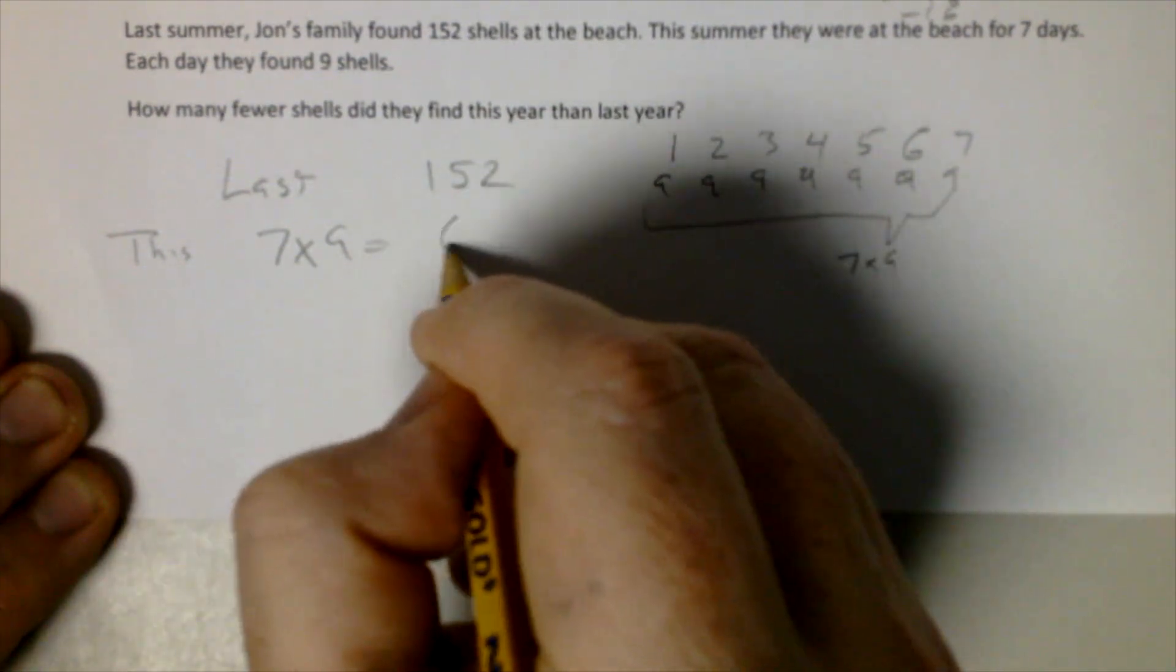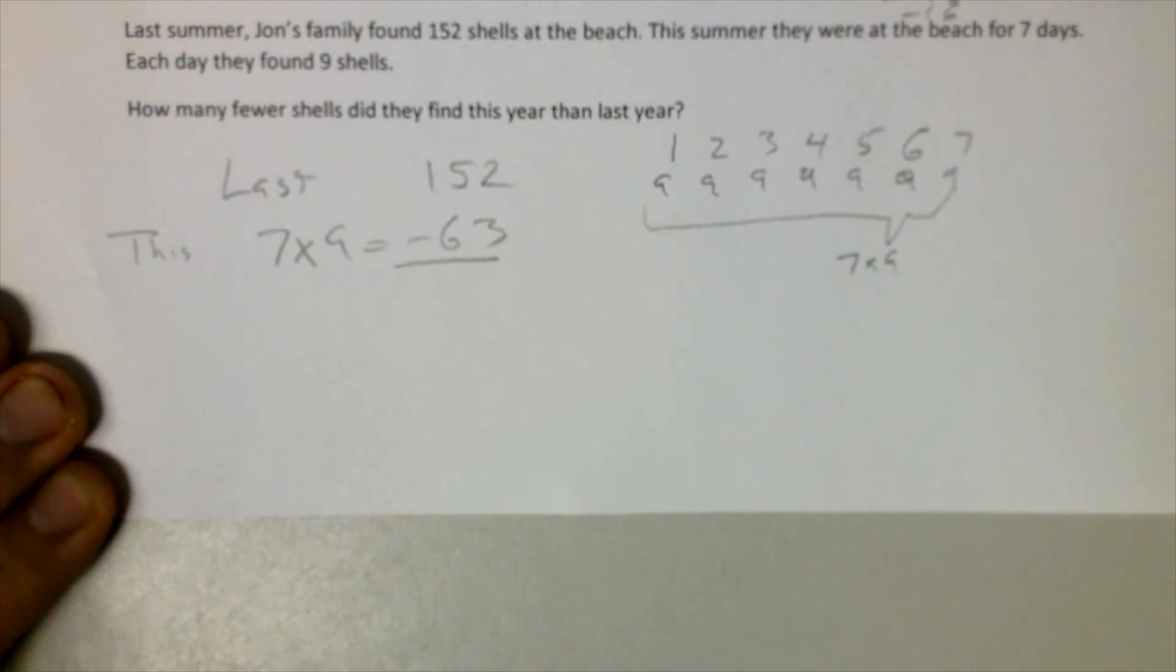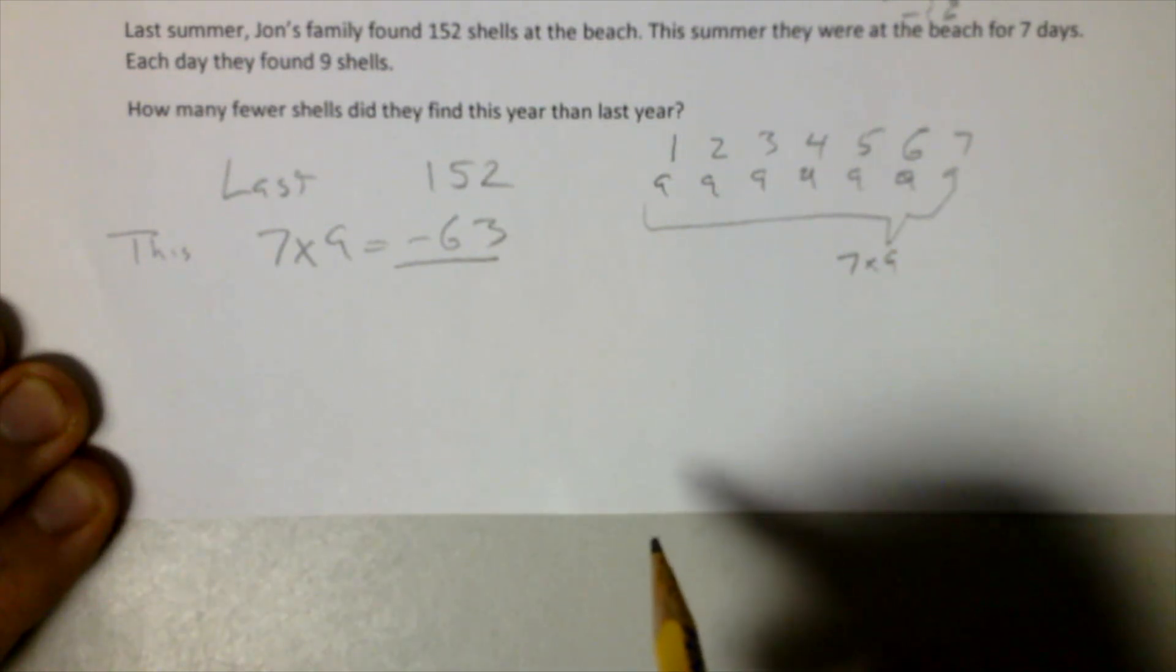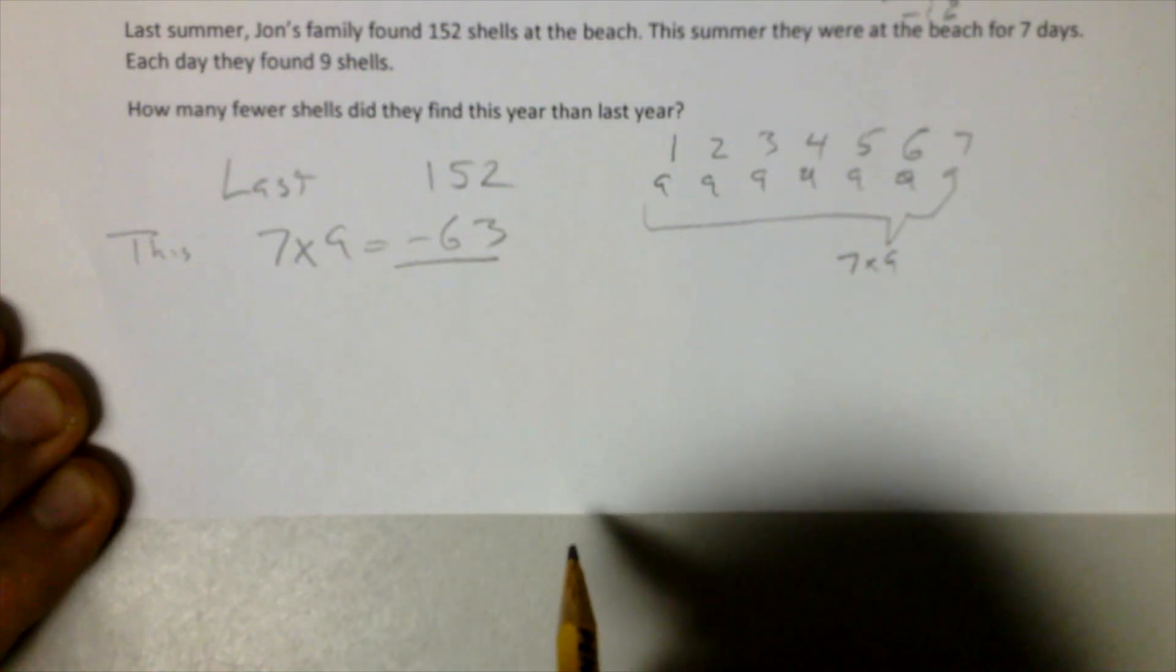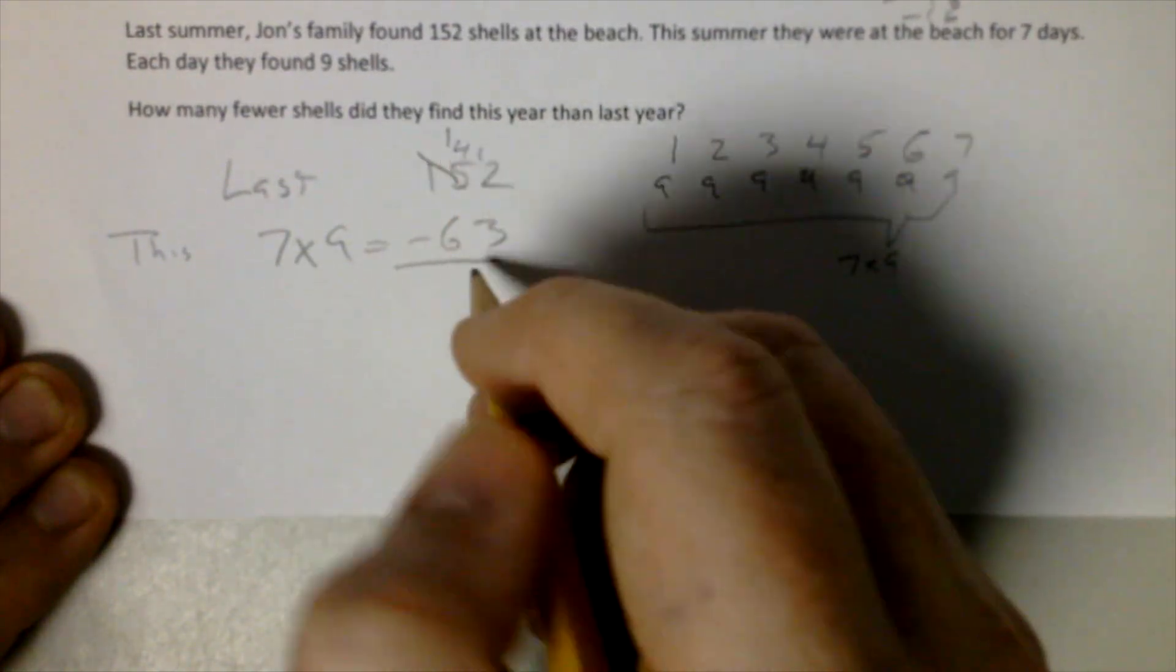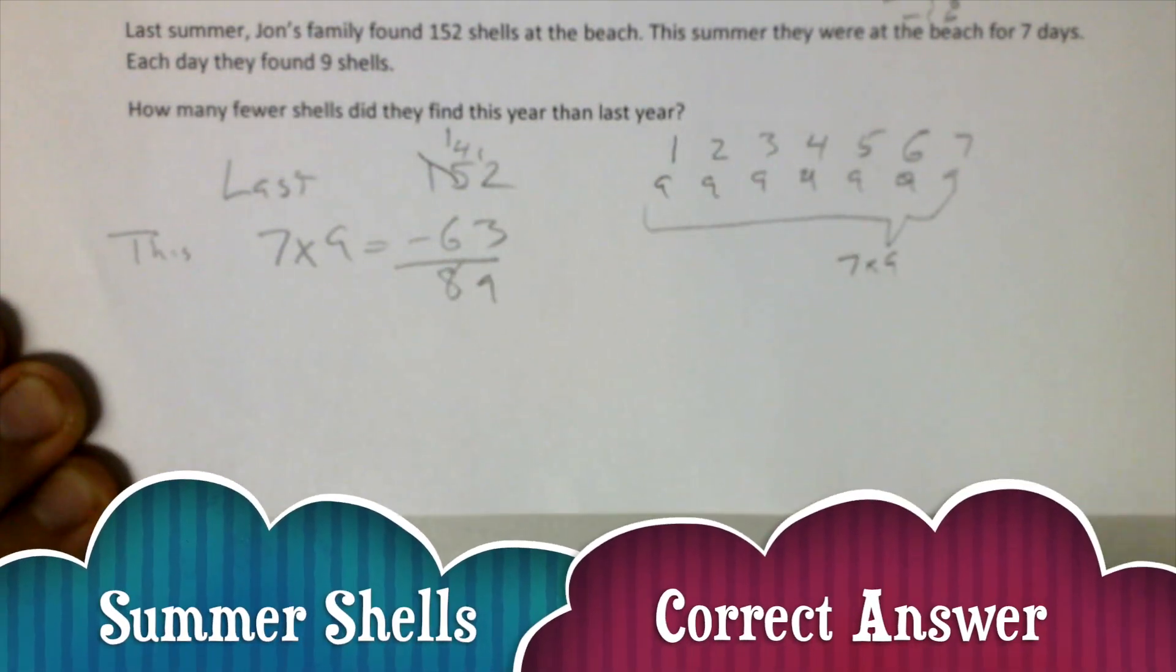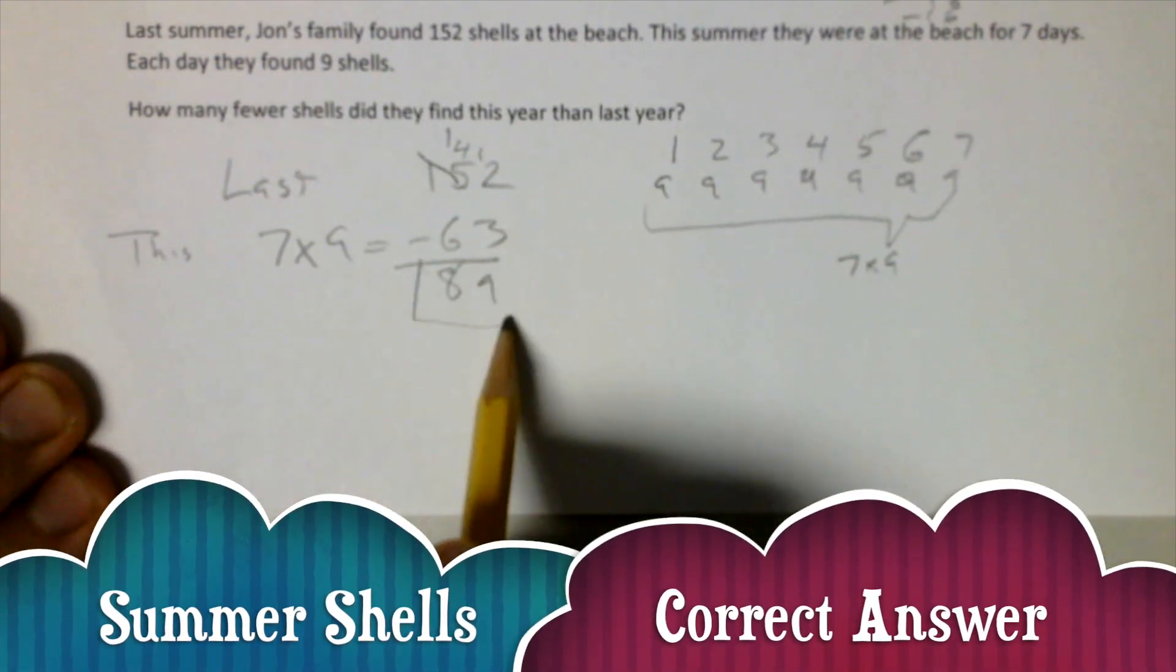So I should know the fact that seven times nine is 63. We get 152 minus 63 is 89, and that's our correct answer.